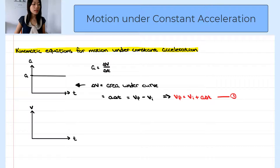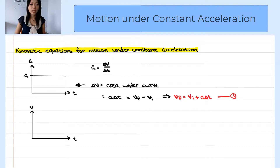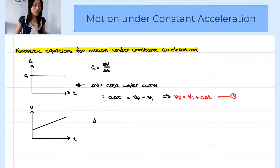Now let's translate this to the velocity graph. Since the instantaneous acceleration is the slope of the tangent line on the velocity graph, when you have a constant acceleration, the velocity will increase linearly. And since the velocity is the derivative of the displacement, delta x would be the area under the curve on the velocity graph.